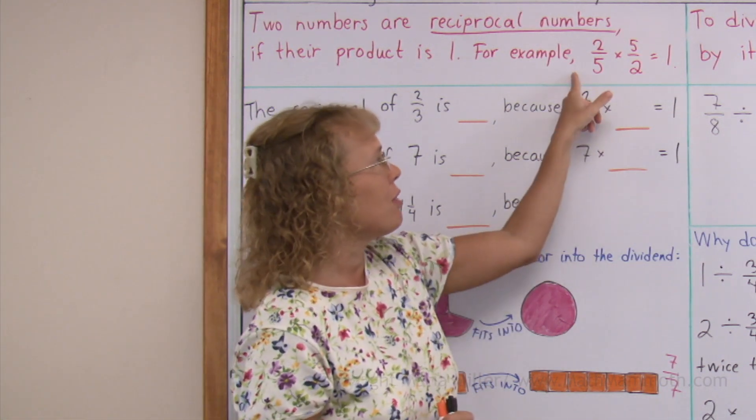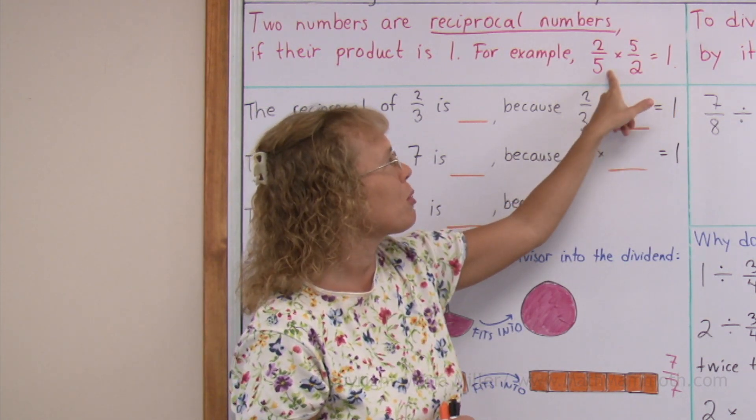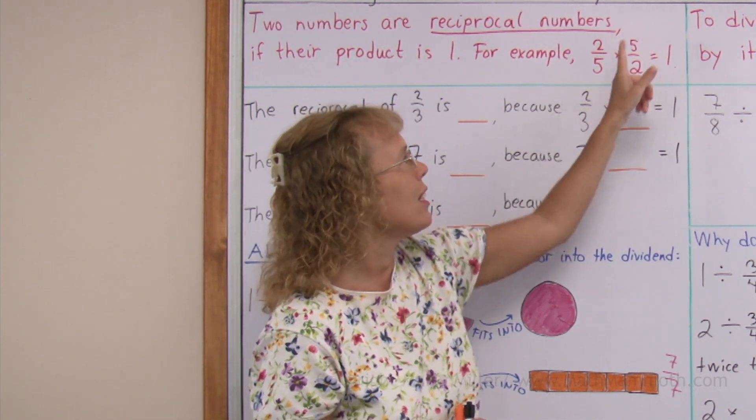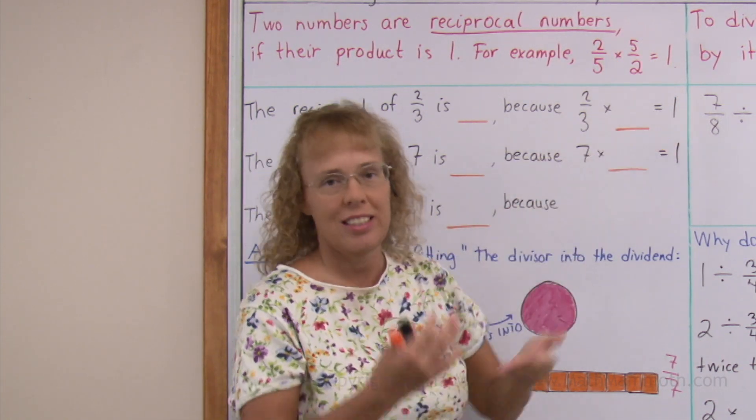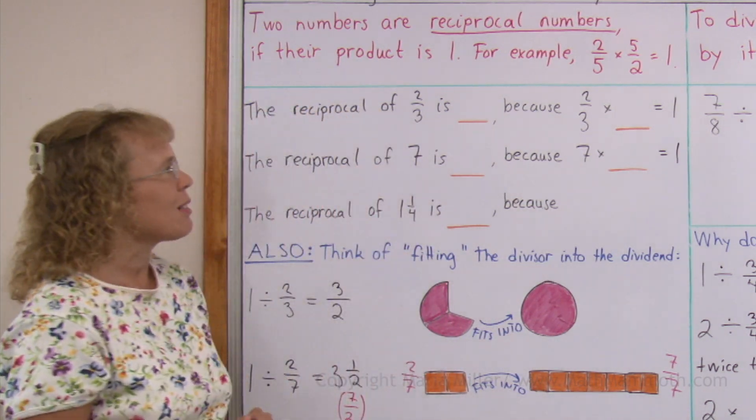For example, 2 fifths and 5 halves are reciprocal numbers, because if you multiply them, you get 1. You get 2 times 5, which is 10, and 5 times 2, which is 10. 10 divided by 10 equals 1. Let's look at some more examples.